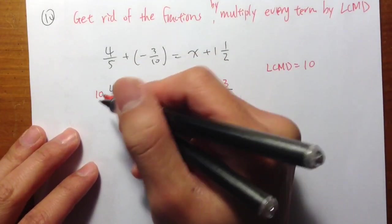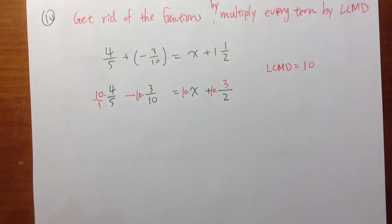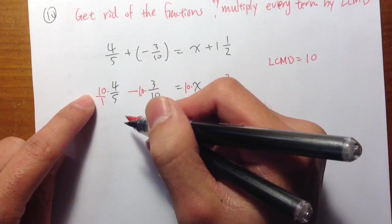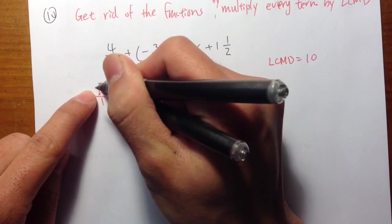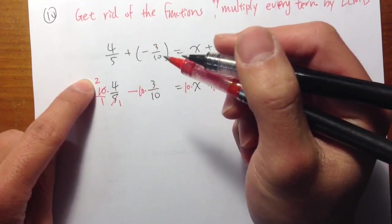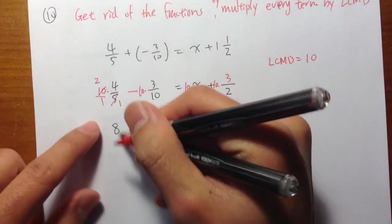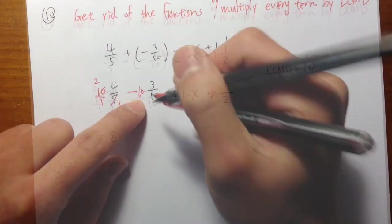So 10 times 4 over 5. To multiply, let me write 10 as 10 over 1. To multiply fractions, we can first cross-cancel. 5 goes into 5 once. 5 goes into 10 twice. And now we just need to do 2 times 4, which is equal to 8. Write 8 over 1, which is the same as 8.